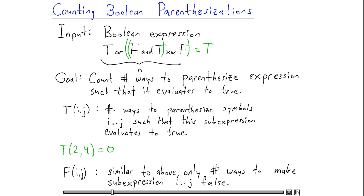Just for simplicity, let's also let F(i,j) denote the number of ways we can parenthesize the subexpression from i to j such that it evaluates to false.